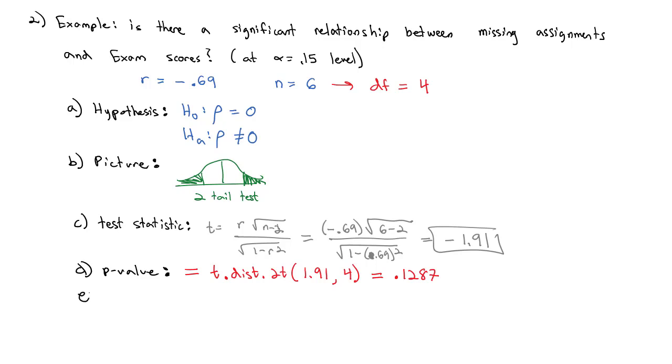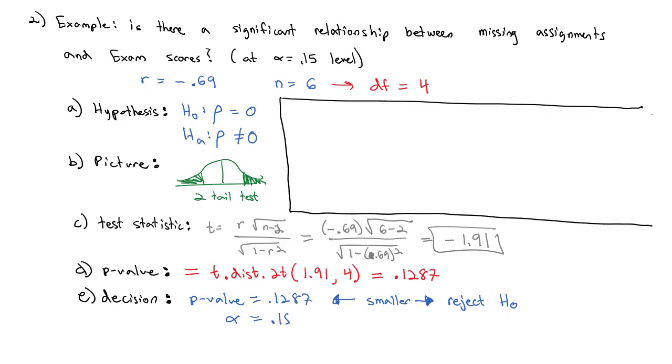This leads to the decision where I look at the fact that my p-value equals 0.1287 and my alpha equals 0.15. My p-value is smaller. Any time my p-value is smaller, we will reject the null hypothesis in favor of the alternative hypothesis.